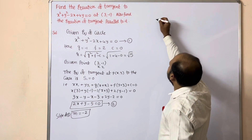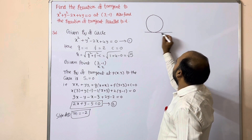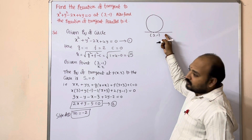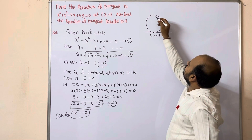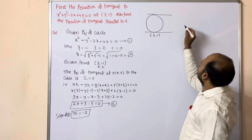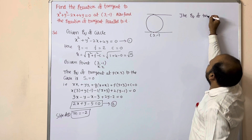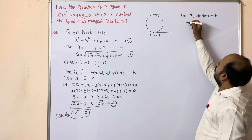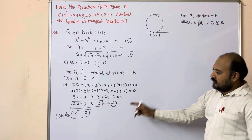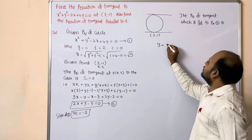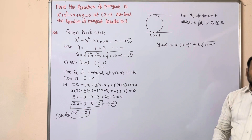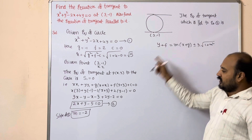Next, they are asking to find the equation of tangent parallel to equation 2. For a tangent parallel to a given line, the formula is: y + f = m(x + g) ± r√(1 + m²). This gives the equation of tangent which is parallel to the given line.